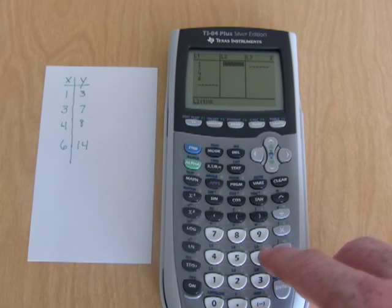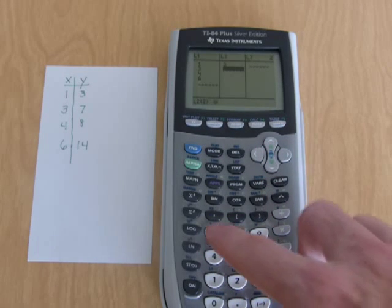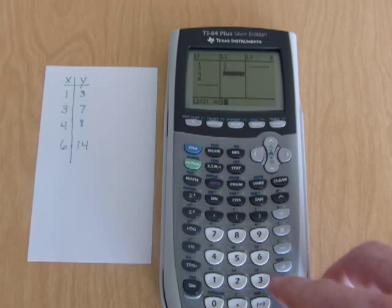I'll arrow over to list two. That's my y values. So I'm going to choose 3 enter, 7 enter, 8 enter, and 14 enter.